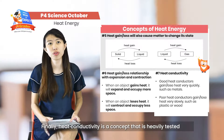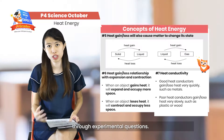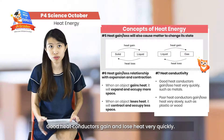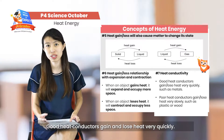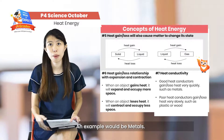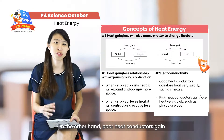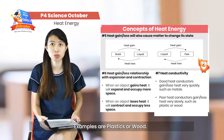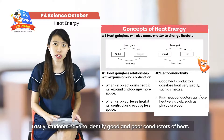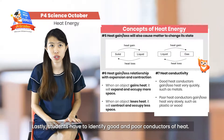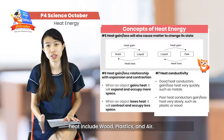Finally, they have to know that heat conductivity is a concept that is heavily tested through experimental questions. Good heat conductors will gain heat and lose heat very quickly, such as metals. On the other hand, poor conductors of heat will gain and lose heat very slowly, such as plastics or wood. Students have to identify good and poor conductors of heat — good conductors are metals, poor conductors are wood, plastic, and air.